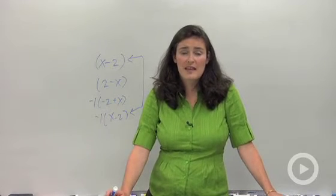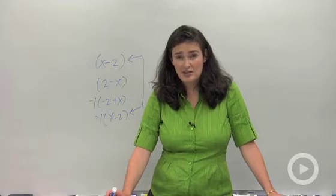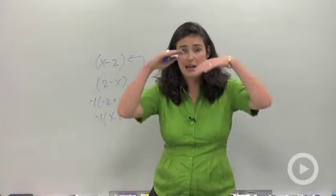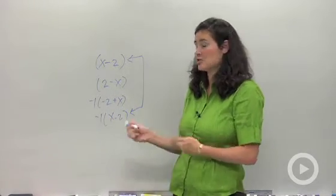So again, the most important thing is to factor everything completely and only cross out factors that are the same on top and bottom. That means it has to be in its multiplied form. You can't cross out something like this. Let me show you.